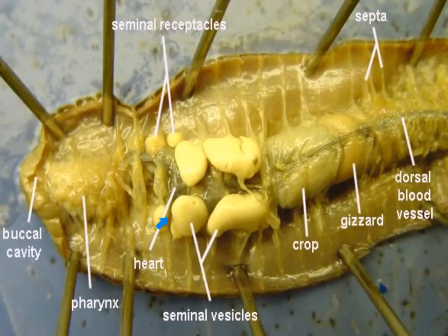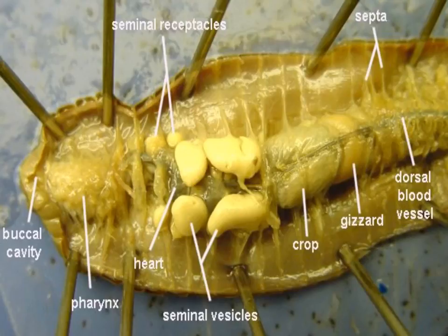The testes are located in segments 10 and 11 and are enclosed within the seminal vesicles. The sperm duct extends to the sperm duct opening on the ventral side of segment 15; however, it is not visible in this diagram.